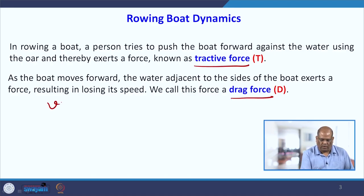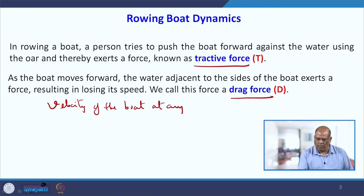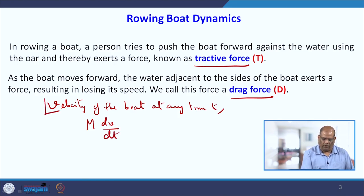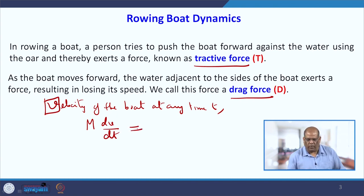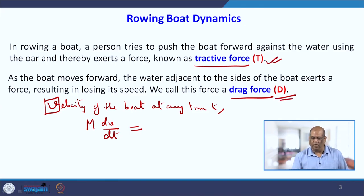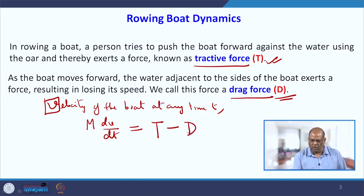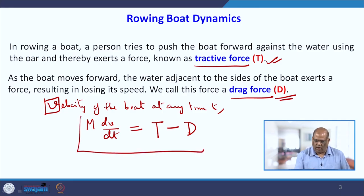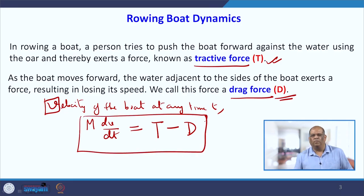If V is the velocity of the boat at any time T, then you have mass into acceleration. And since we want the boat to move forward, T must be greater than D. If T is less than D, obviously it will not move forward. So this will be T because the boat is moving forward — its force has to be greater — and there will be a drag force minus D.